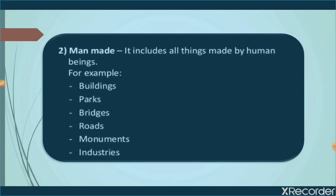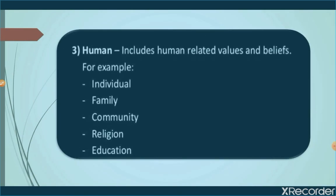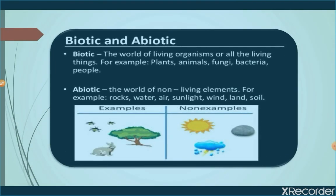Man-made environment includes all the things which are made by human beings, like buildings, parks, bridges, roads, monuments, and industries. The third component is the human environment. Human environment includes human-related values and beliefs. All factors other than the natural factors come under human environment, like individuals, family, community, religion, education, etc.